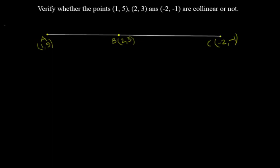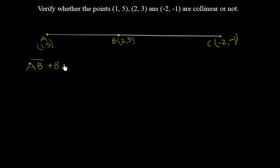First, let's take the condition: in a line segment, if we measure the length from A to B and then B to C, the segment AB plus segment BC should be equal to segment AC. If this condition is satisfied, then we can say that these points are collinear. So let's find the distances AB, BC, and then AC.